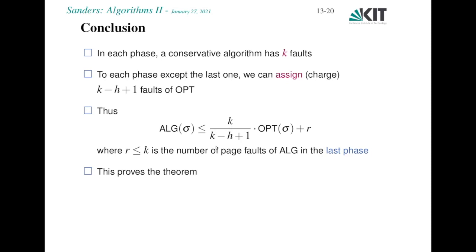In particular, if k=h we have a k-competitive algorithm. An interesting case: if h is half of k, then the ratio is something like 2, meaning we need twice as much cache and incur twice as many page faults as an optimal algorithm. That sounds like a reasonable price to pay for the lack of knowledge of the future.